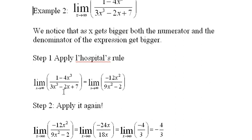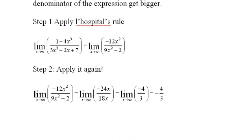So I take the limit here, and I take the derivative of the top and get negative 12x squared, the derivative of the bottom, which is 9x squared minus 2. And I again have infinity over infinity. So what do we do? We simply apply L'Hopital's rule again, and here we do it again.